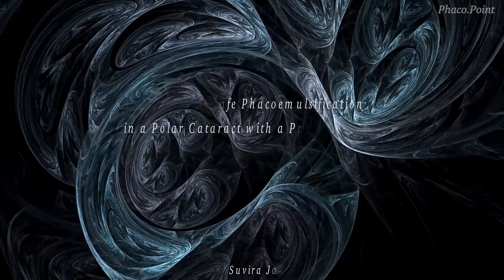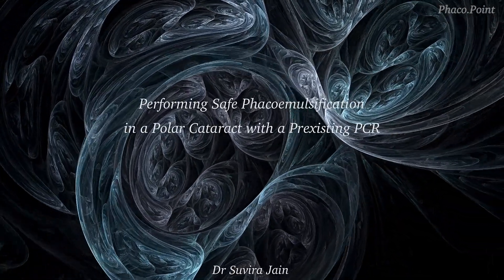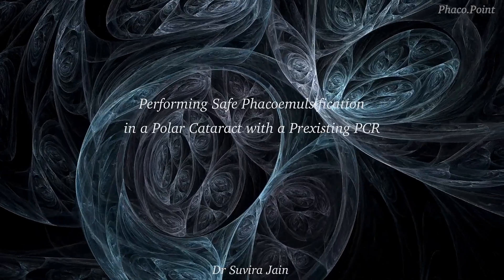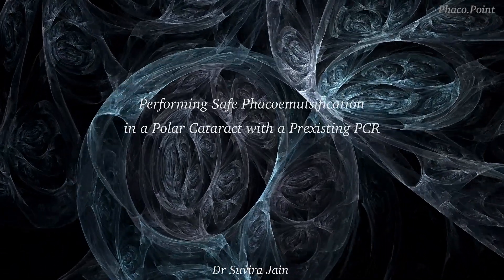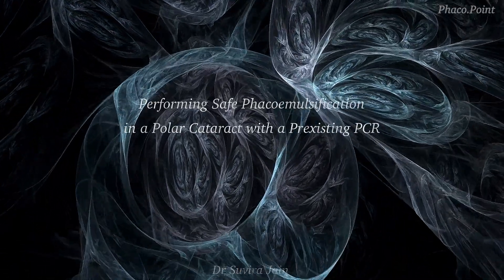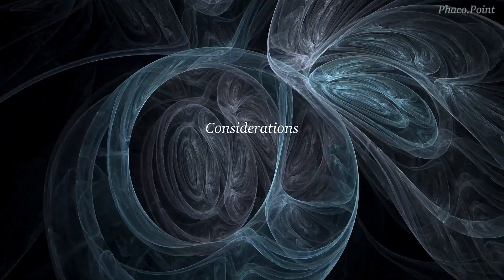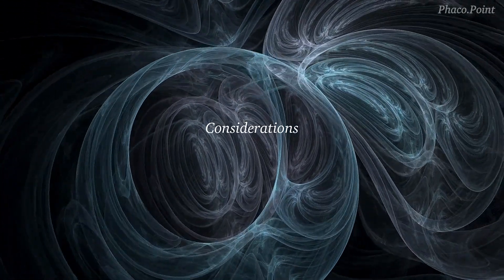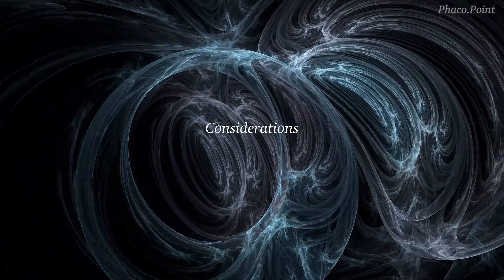I'd like to discuss this very interesting case of a posterior polar cataract — the first that I've ever encountered with a pre-existing opening in the posterior capsule. Now, knowing that there is already an opening in the posterior capsule, how would our approach to this patient be different?